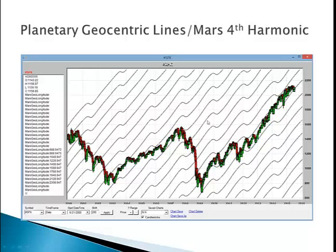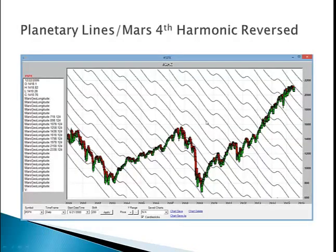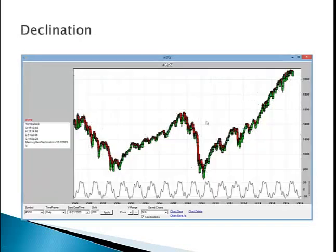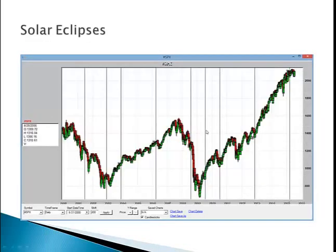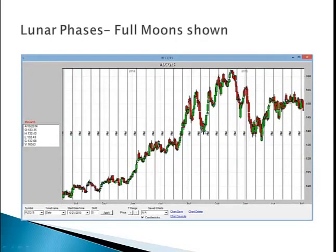This is the fourth harmonic planetary geocentric line, and these are the same lines reversed. This is Mercury declination on the SPX, showing the inflection points of Mercury declination. Here the solar eclipses are plotted, and here lunar phases — full moons — are shown.